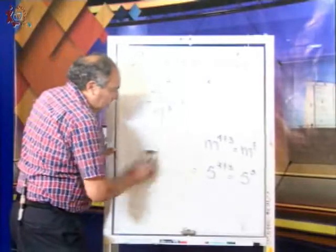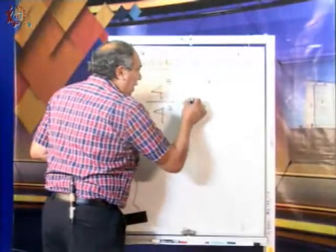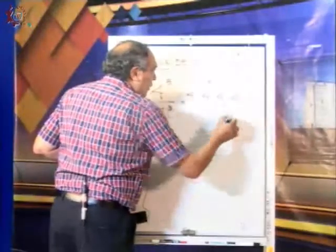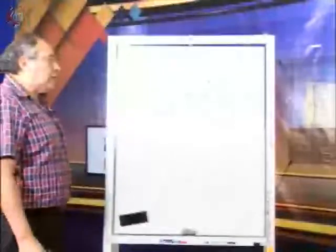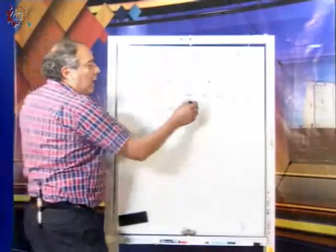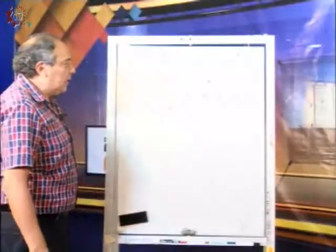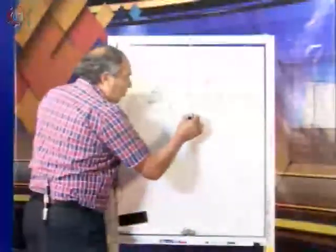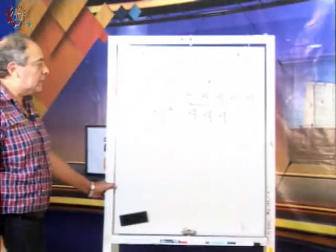Si recordamos el principio básico de potencias, escribiría en la parte de arriba el 4 multiplicado cinco veces. Nótese que el punto como símbolo de multiplicación va en la parte de en medio de los números — no va abajo, porque si no indicaría cuatro punto cuatro. Y abajo tenemos el cuatro multiplicado tres veces. Ese es el concepto de potencia.